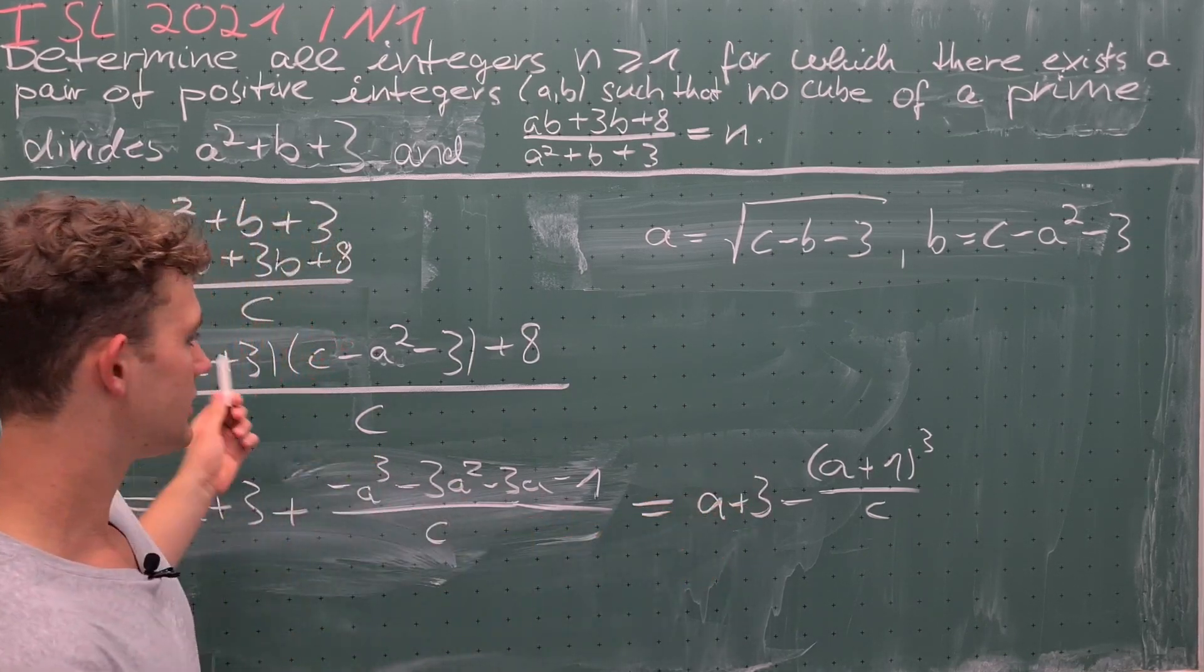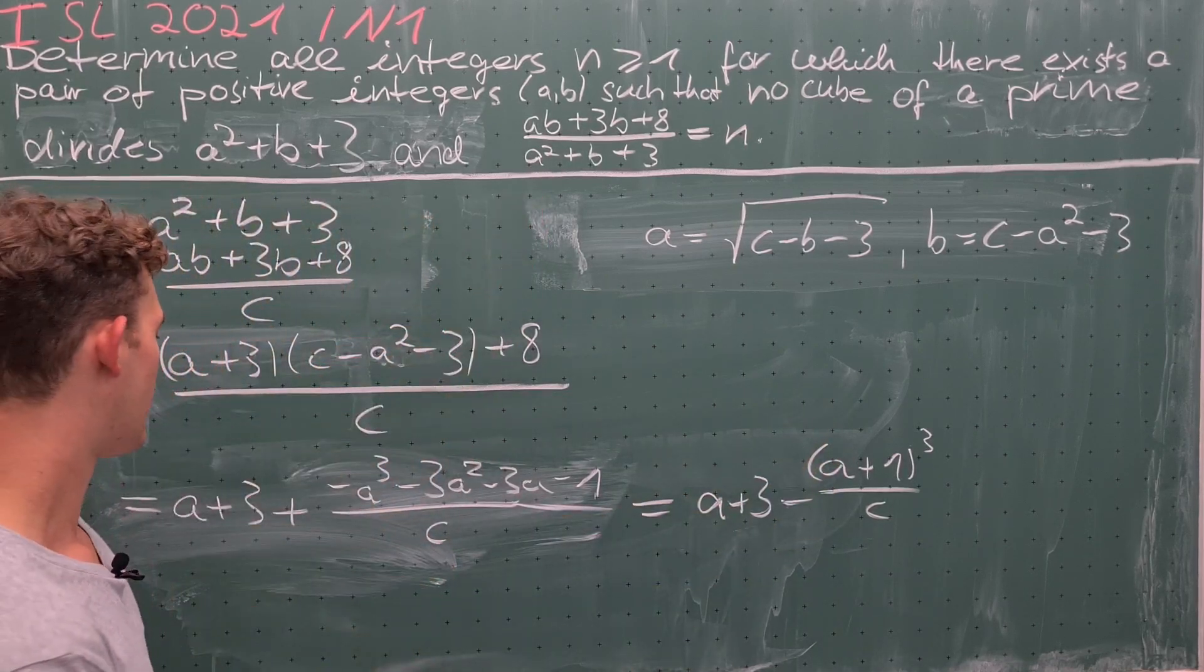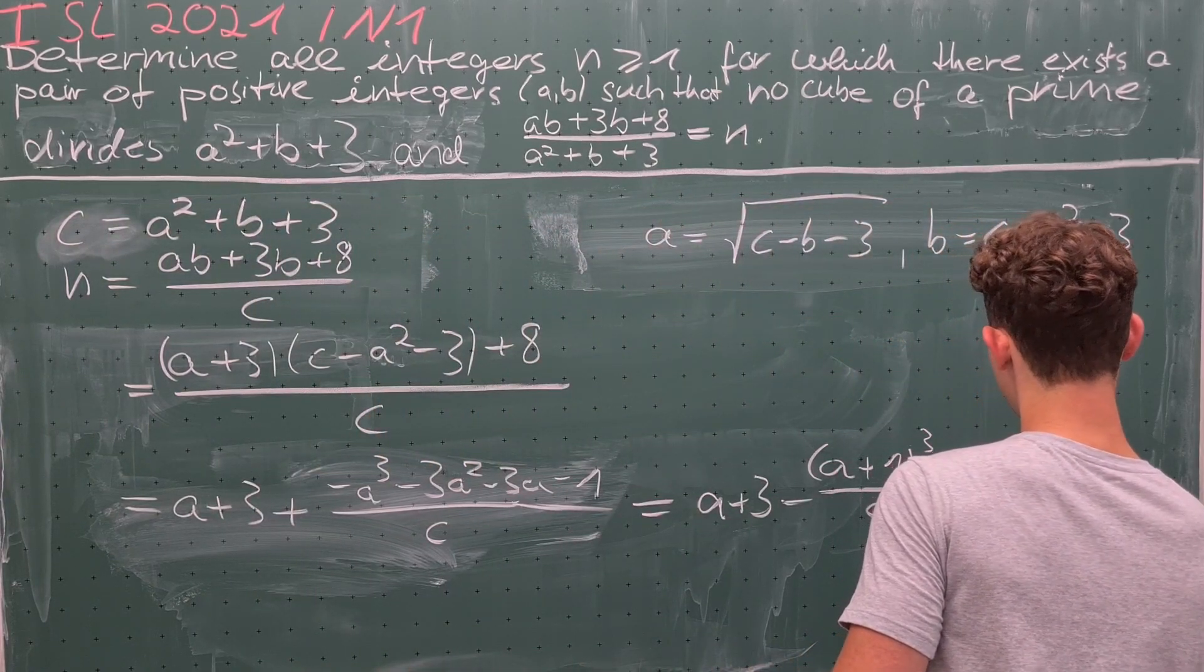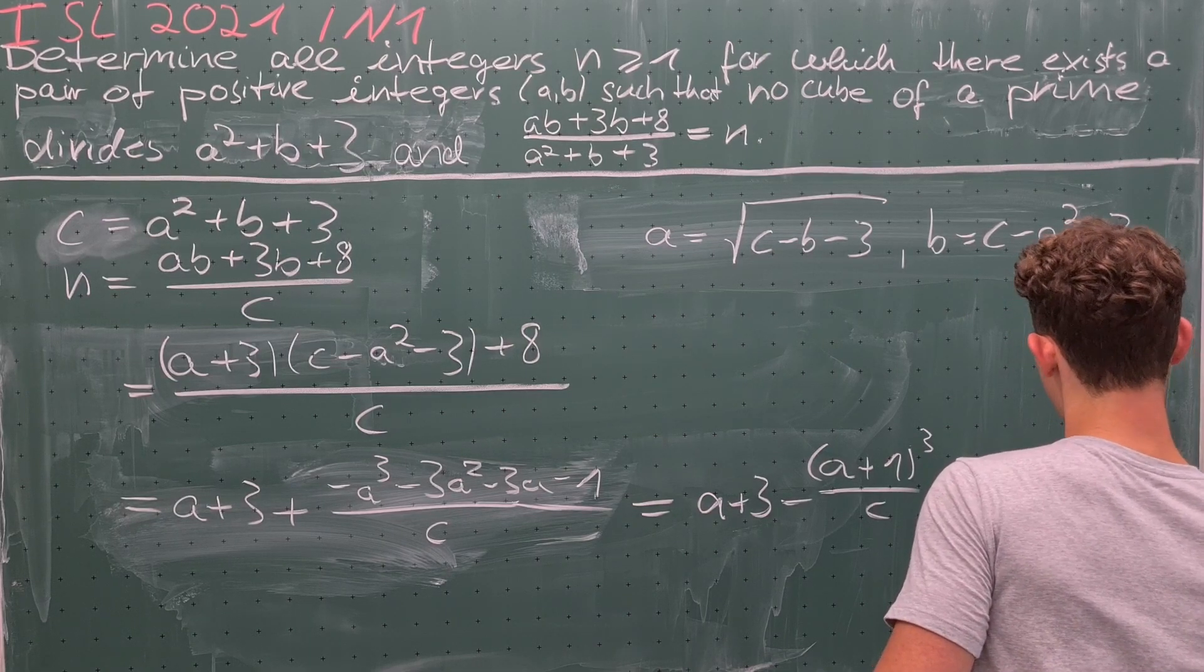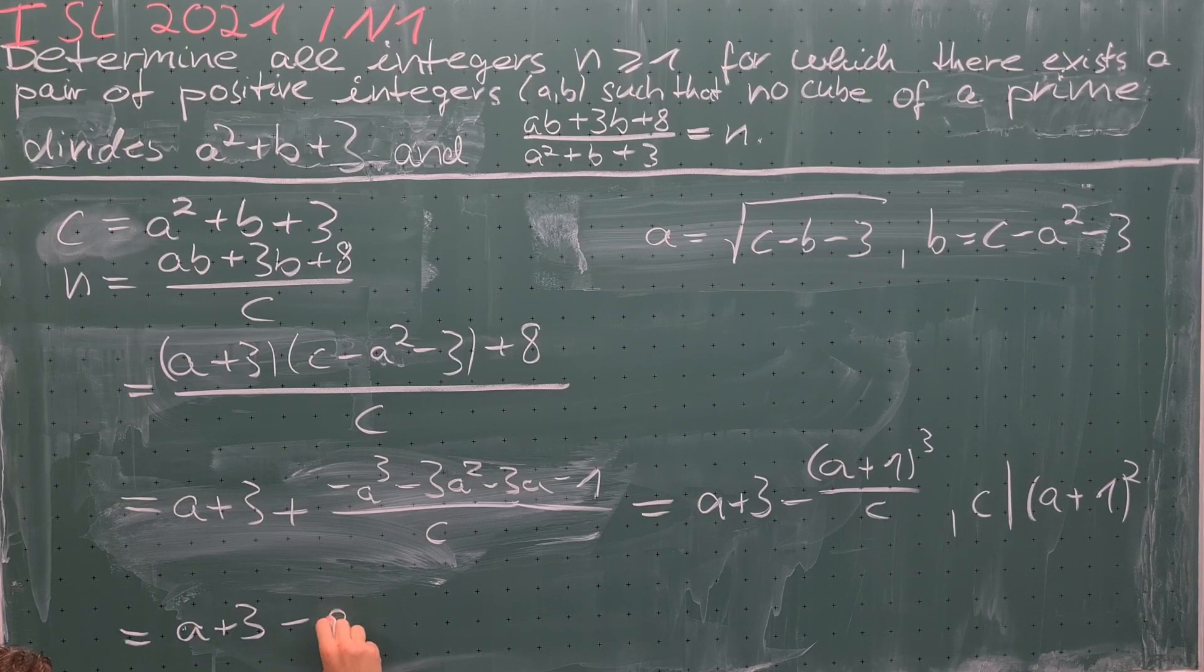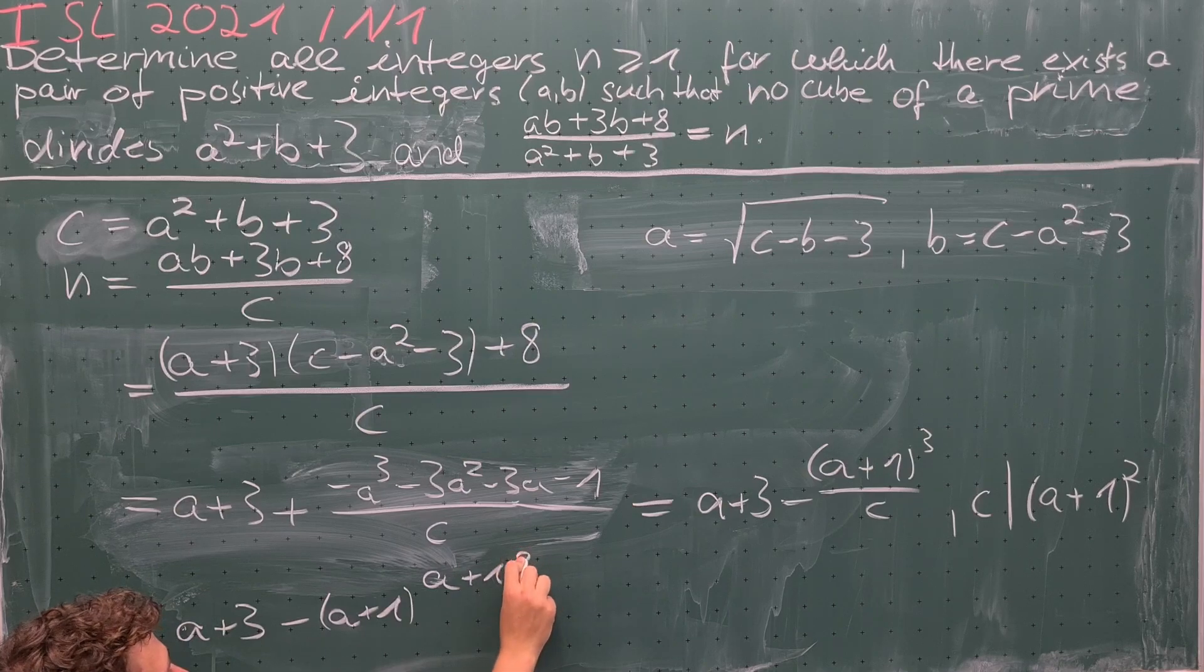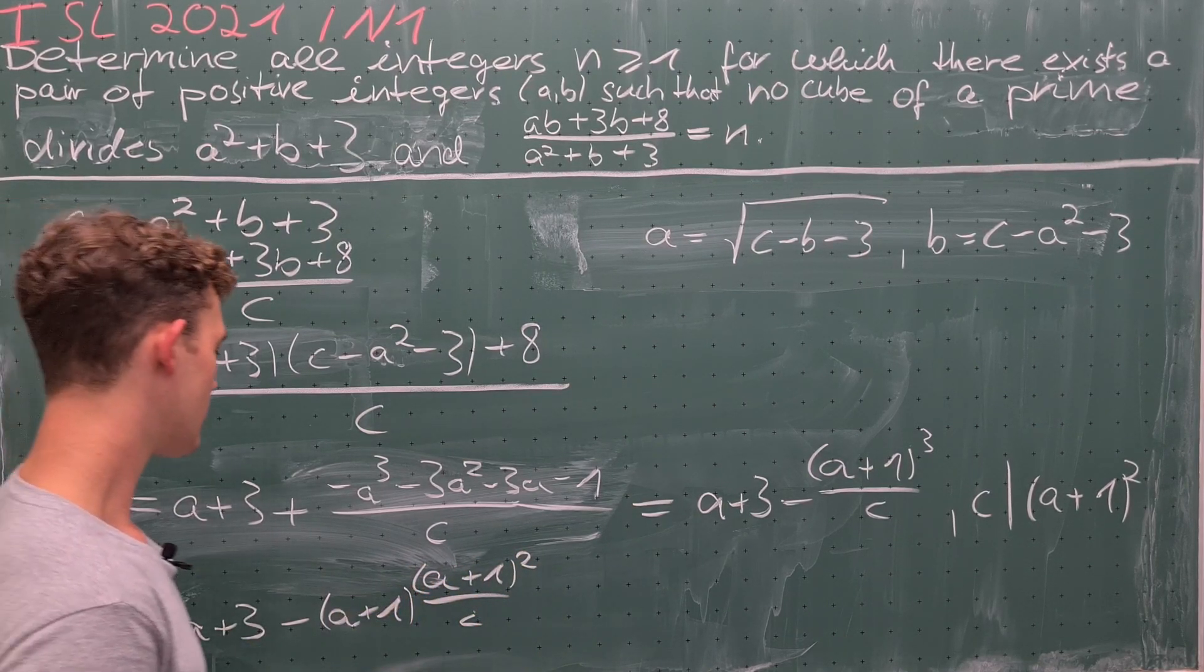But since n is an integer, c must divide (a+1)³, and combined with the above expression, we get that c must also divide (a+1)². But that means that n = a + 3 - (a+1) times (a+1)²/c.